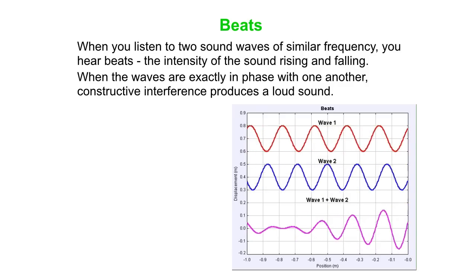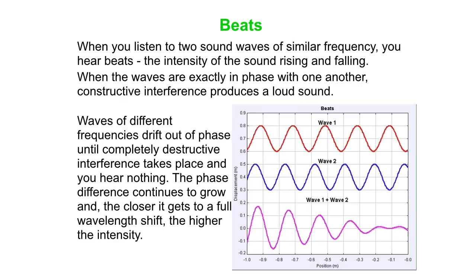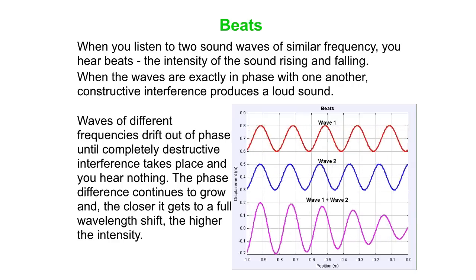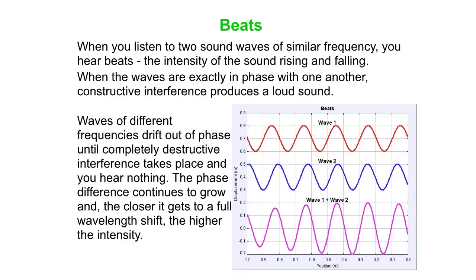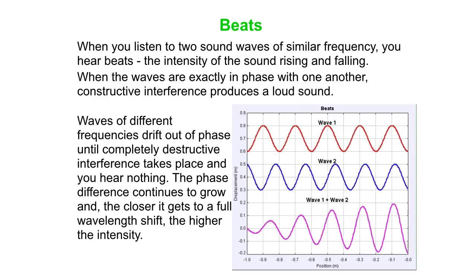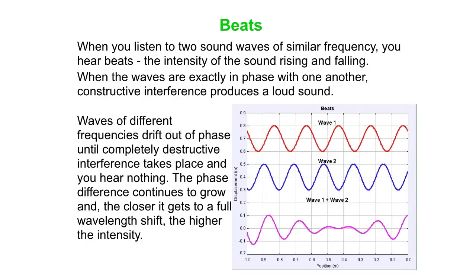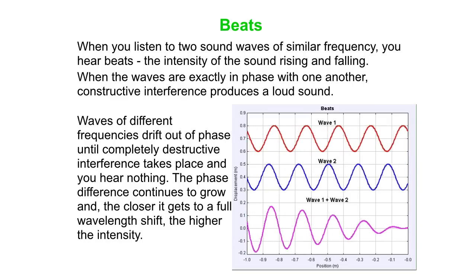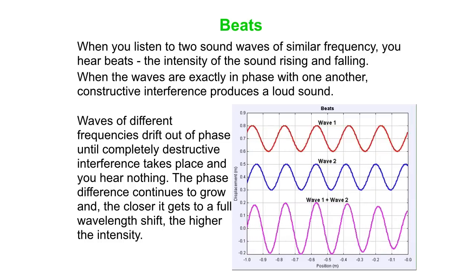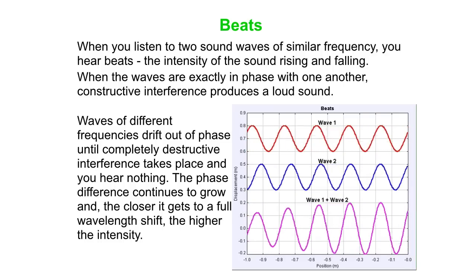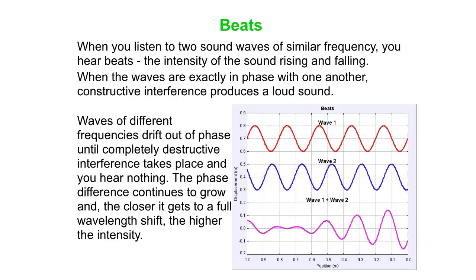If the frequencies are just a little bit off from one another, then gradually the waves will drift out of phase, and then finally destructive interference will take place, and you hear nothing. The phase difference continues to grow until you get back to a full wavelength, and then you get back to constructive interference again. So you can see this cycle where the resultant changes from having a large amplitude due to constructive interference to basically no amplitude at all due to destructive interference.